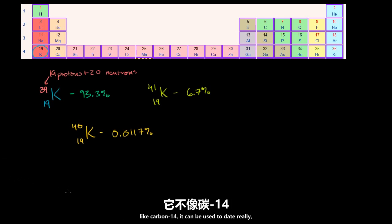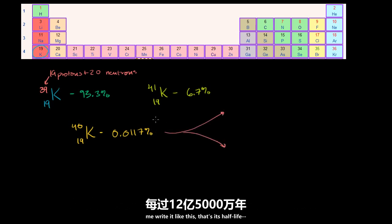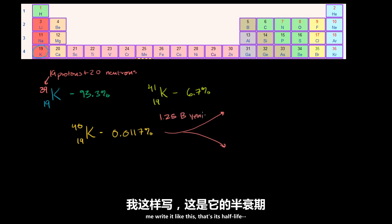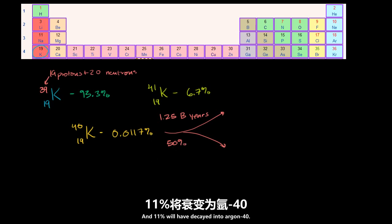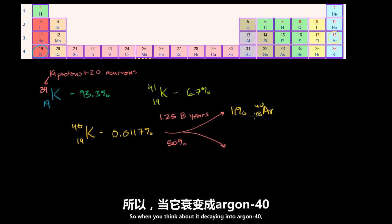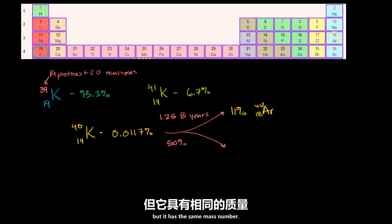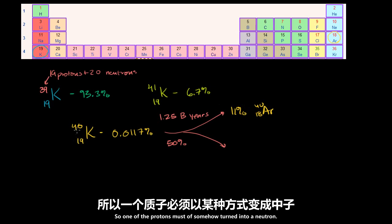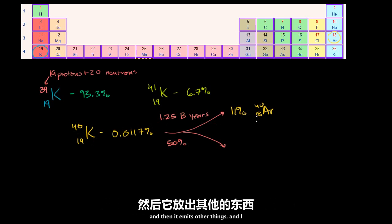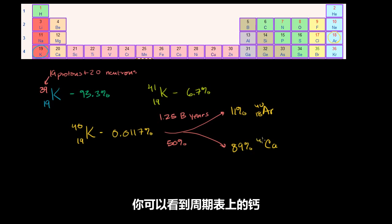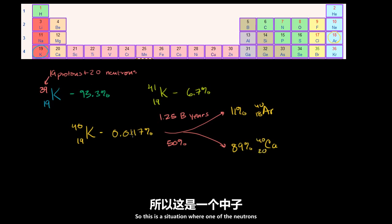So the good thing about that, as opposed to something like carbon-14, it can be used to date really, really old things. Every 1.25 billion years — that's its half-life — 50% of any given sample will have decayed. And 11% will have decayed into argon-40. Argon has 18 protons, so it lost a proton but has the same mass number, meaning one of the protons turned into a neutron — it actually captures one of the inner electrons. And 89% turns into calcium-40, where one of the neutrons turns into a proton.